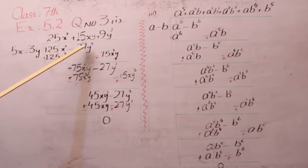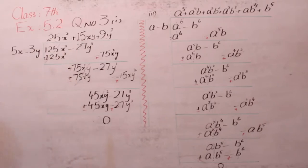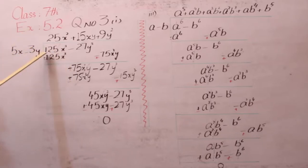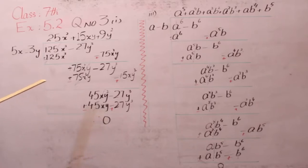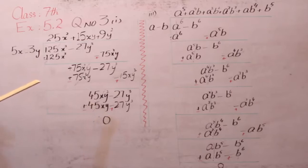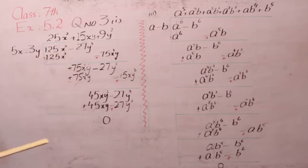हमारे पास जो first values दिए हुए हैं वो हैं 125x की 3 और 25y की 3। इसके अंदर rule यह होता है कि आपके पास जो coefficient और variable होता है, first में जो भी value लिखी होती है उसके coefficient और variable के equal लेकर आना होता है। सबसे पहले sign, फिर coefficient, फिर variable देखें।